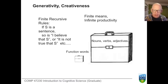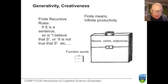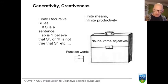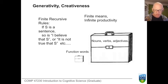One of the features that has excited generative linguists is the generativity of language — the fact that most sentences are entirely novel, and that although we have finite means at our disposal, we can generate an infinite number of sentences. We have a finite set of rules and a finite set of words.